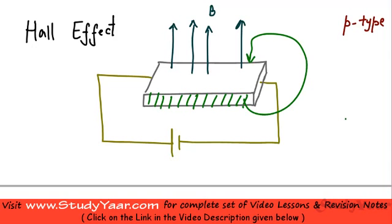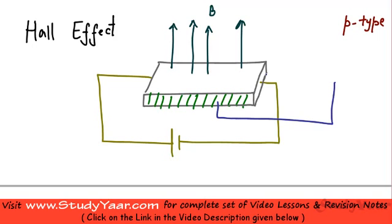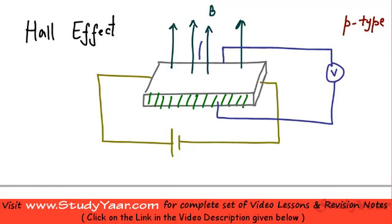The surface which is opposite to this. So if you were to connect a voltmeter between these two faces of your semiconductor, then you are going to see a reading indicating that a potential difference has developed between this face and the face on the other side of this semiconductor. This effect — the development of potential difference when a semiconductor carrying current is placed in a magnetic field — is known as the Hall effect.